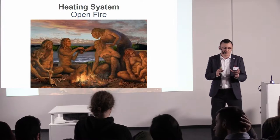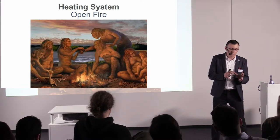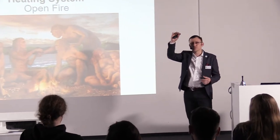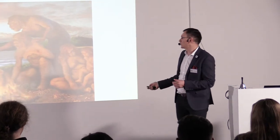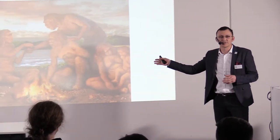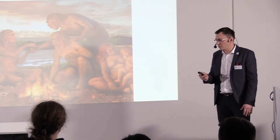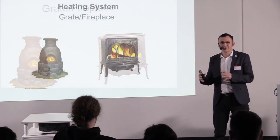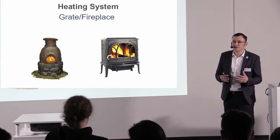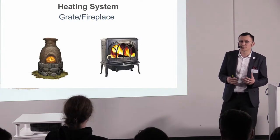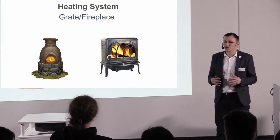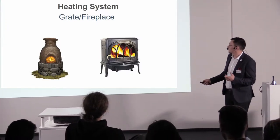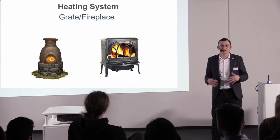We'll start from the bottom and go to the top of all these applications — see where we started and what we have now. The first heating system was open fire, as you can see — even our ancestors used it to heat, to cook, for everything. As people started moving into caves or building wooden houses, having open fire inside could be very dangerous. So they found that they could create some kind of grate or fireplace inside that could warm the house or room.